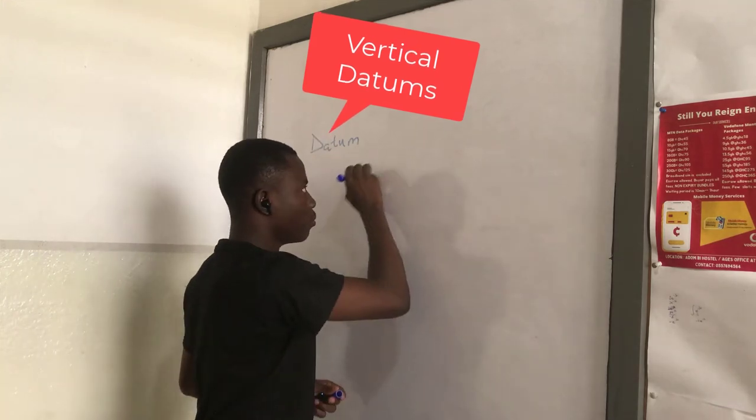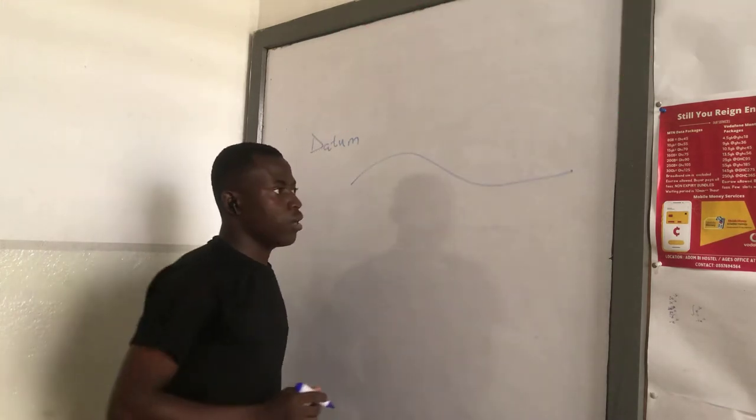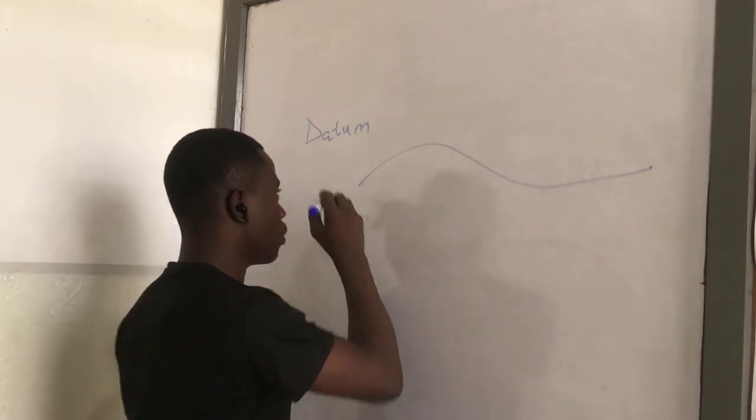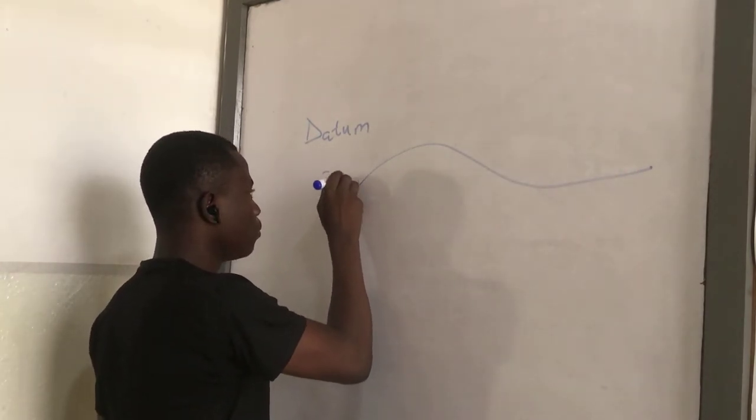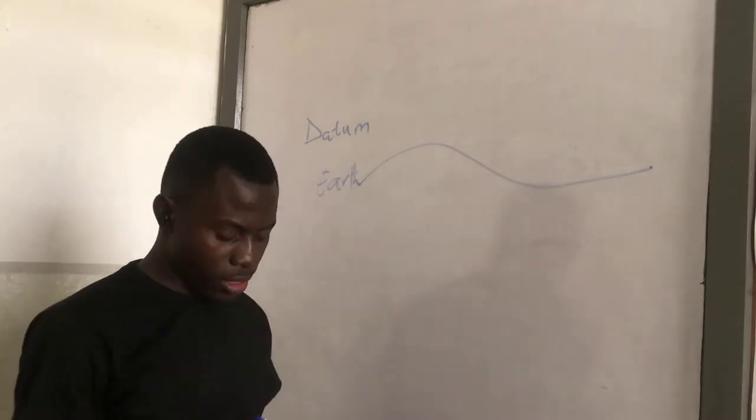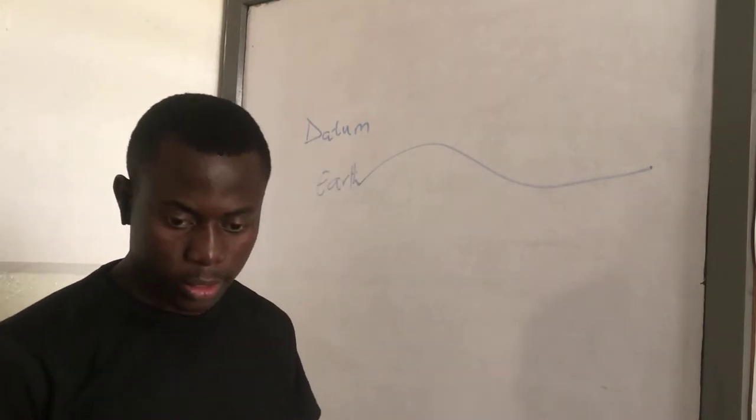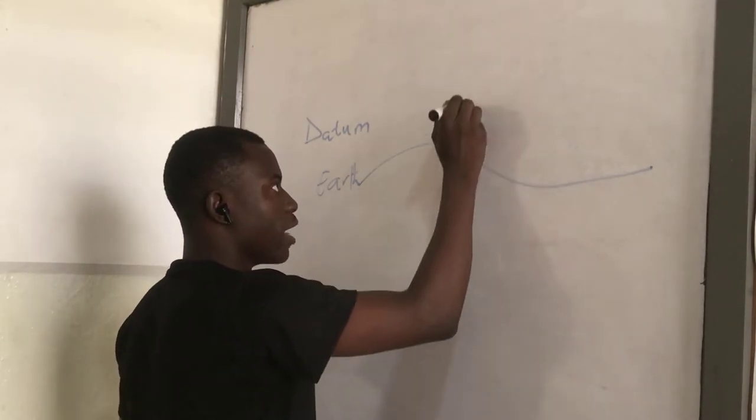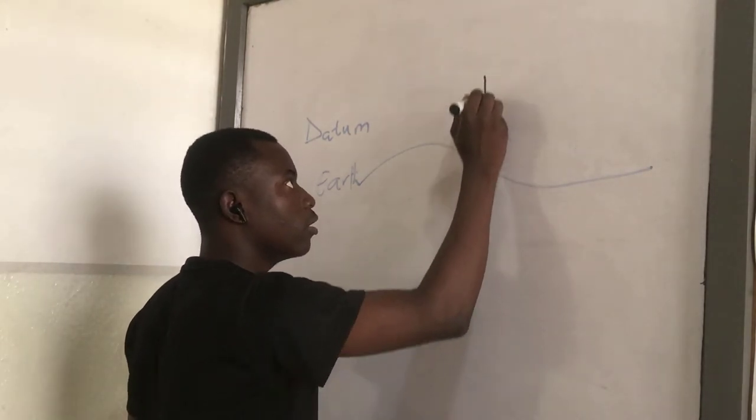Let's assume I have a particular area, let's say the earth surface. So let's call it the earth. And I have a building here. So this is a building.